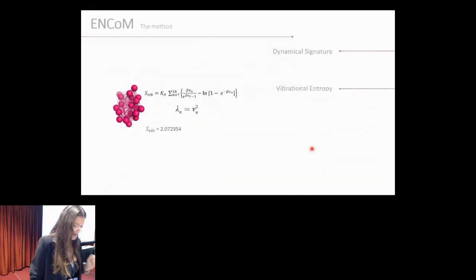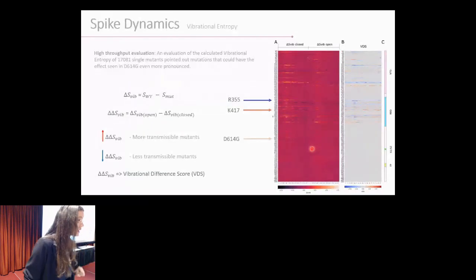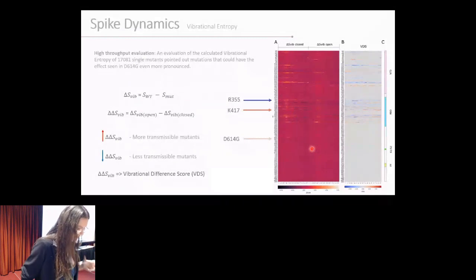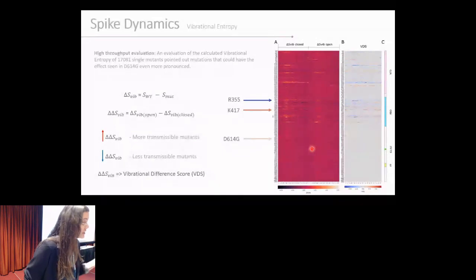The next function that we used was to calculate the flexibility of this full structure instead of residue per residue. We did that using the eigenvalues associated with each one of the residues. We did that to be able to calculate, in a simplified method, a high-throughput evaluation of every single possible single mutation that we could perform in most of the structure. We stopped around position 900, because after that, it's transmembrane regions, so the movement of that is not that relevant.